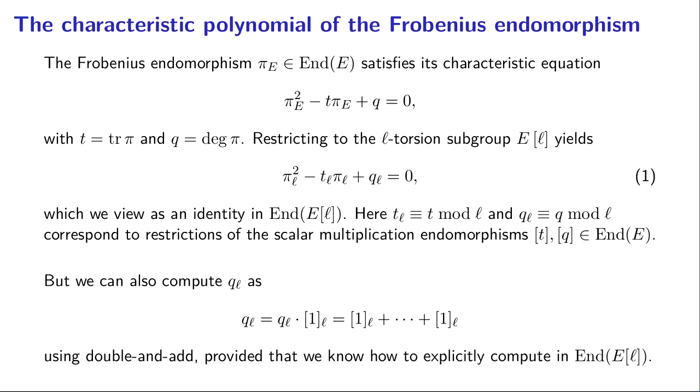So our characteristic polynomial for the Frobenius endomorphism is x squared minus tx plus q, and I'm going to use π_E to denote the Frobenius endomorphism. t is the trace of Frobenius, q is the degree of the Frobenius endomorphism as an isogeny, as an endomorphism from the elliptic curve to itself.